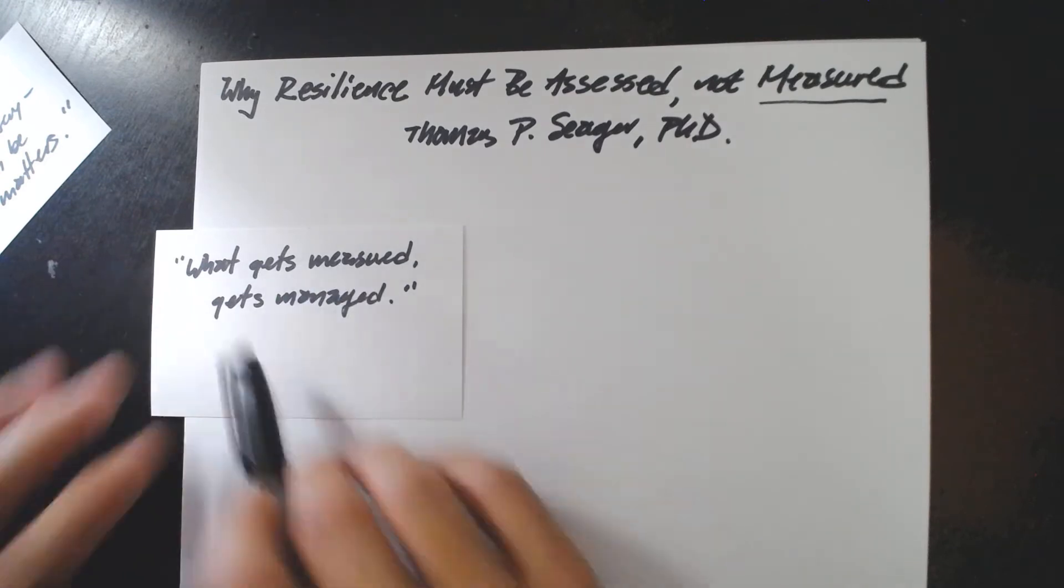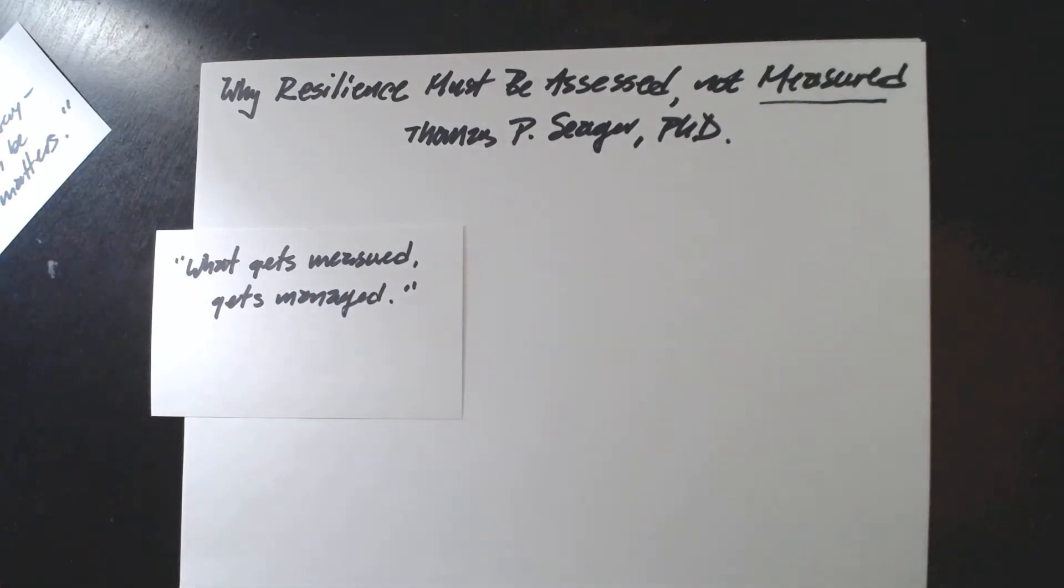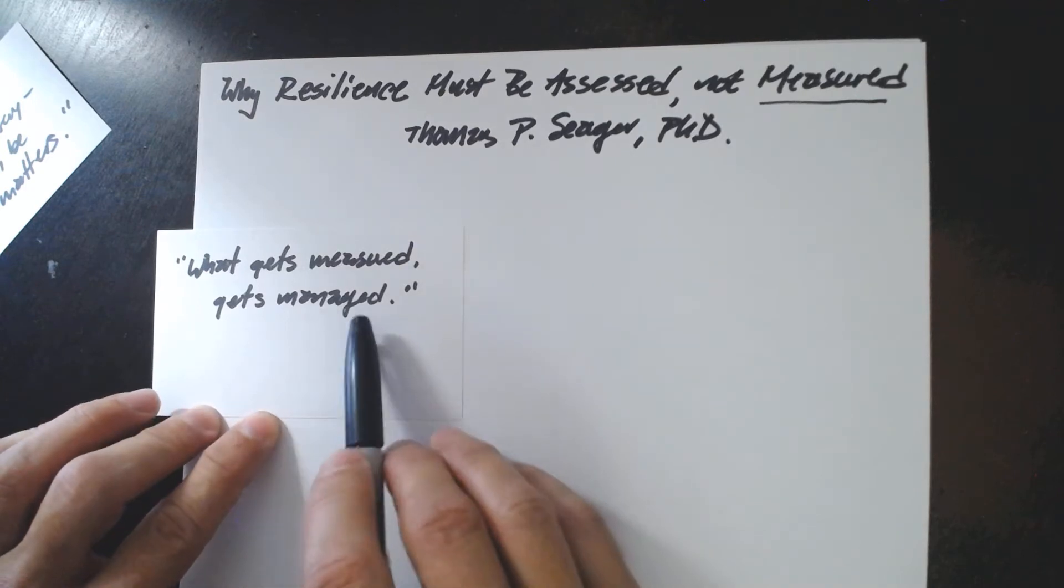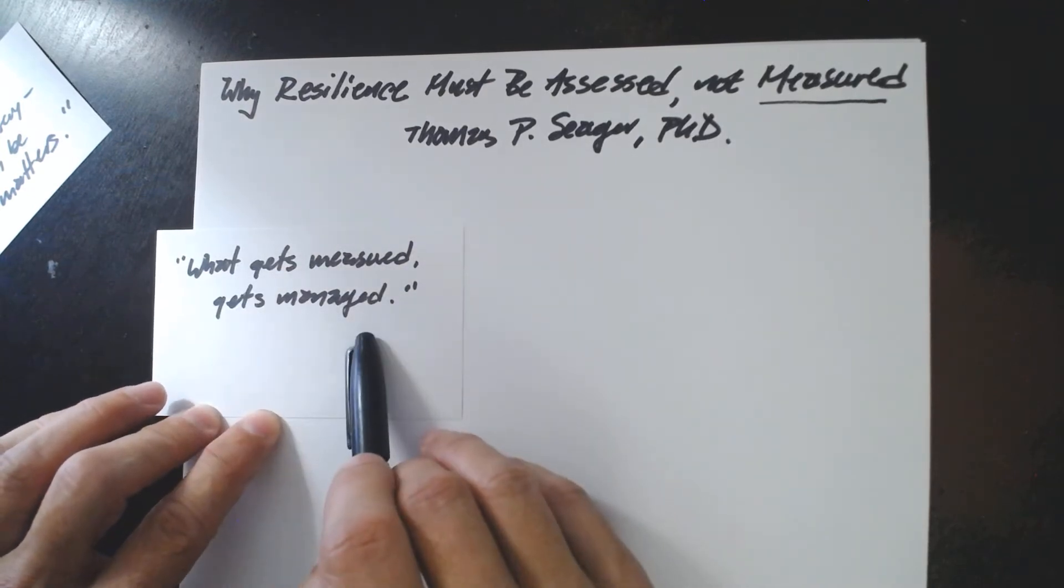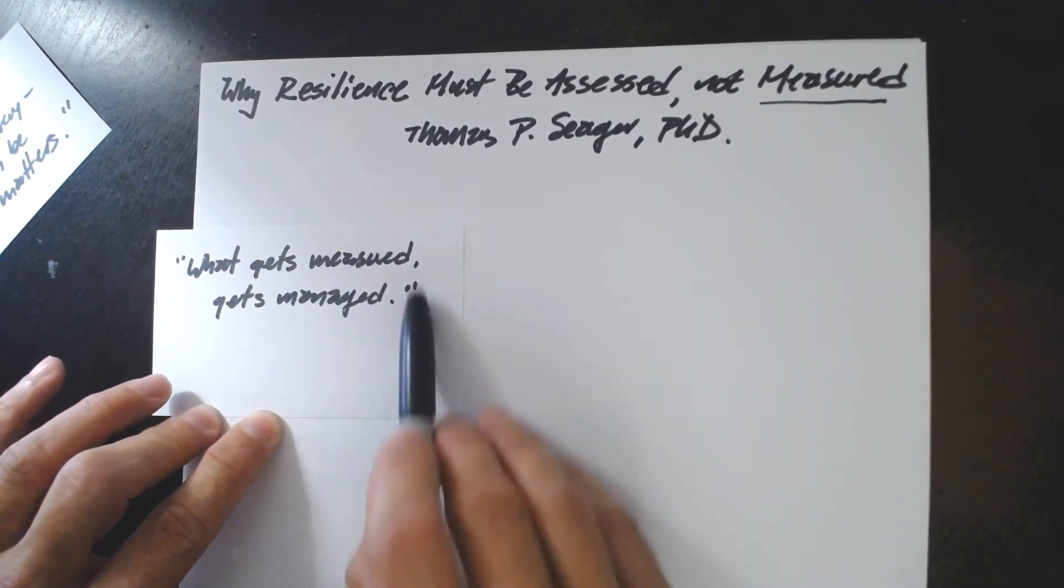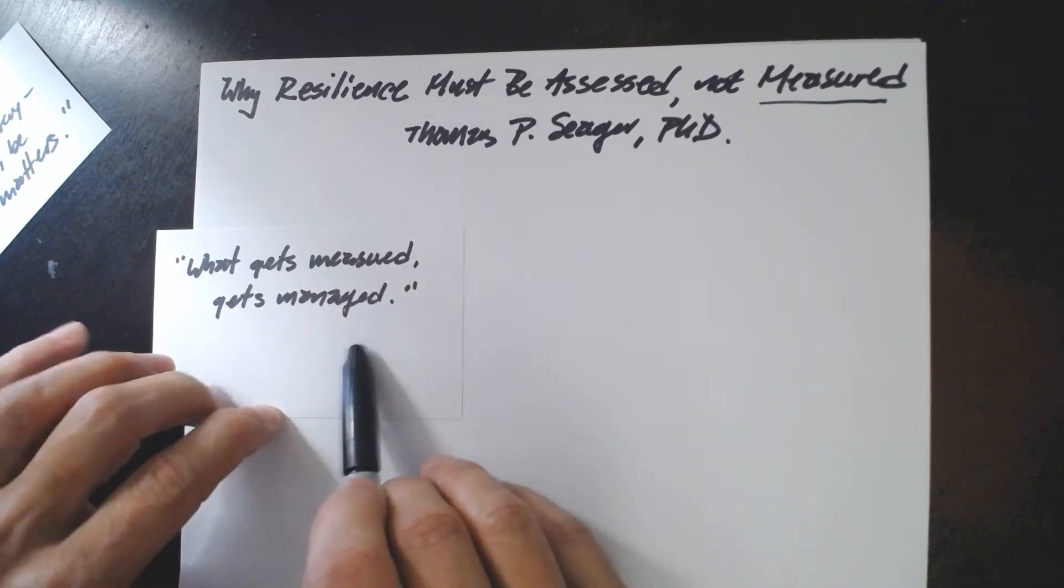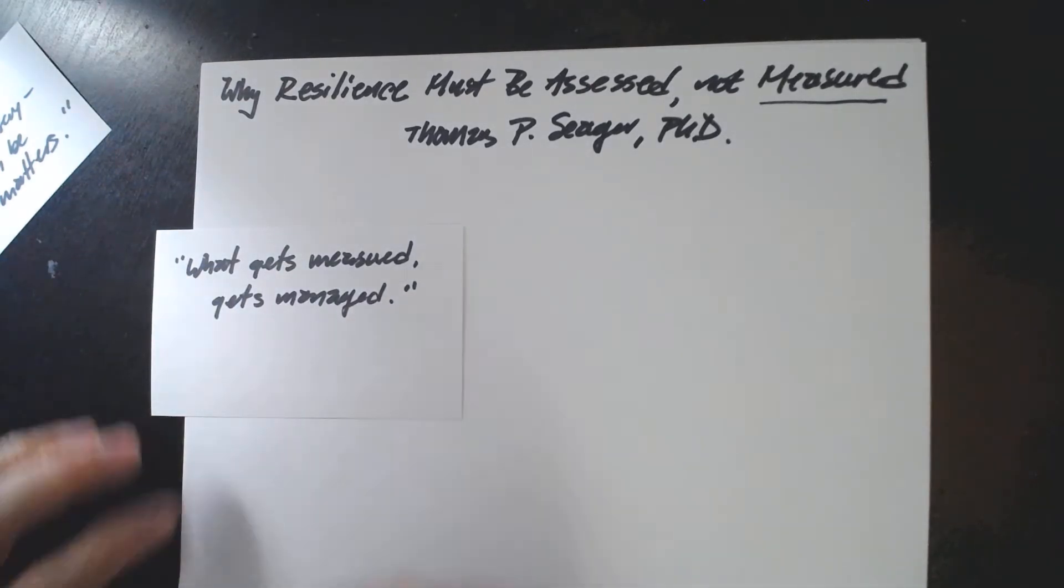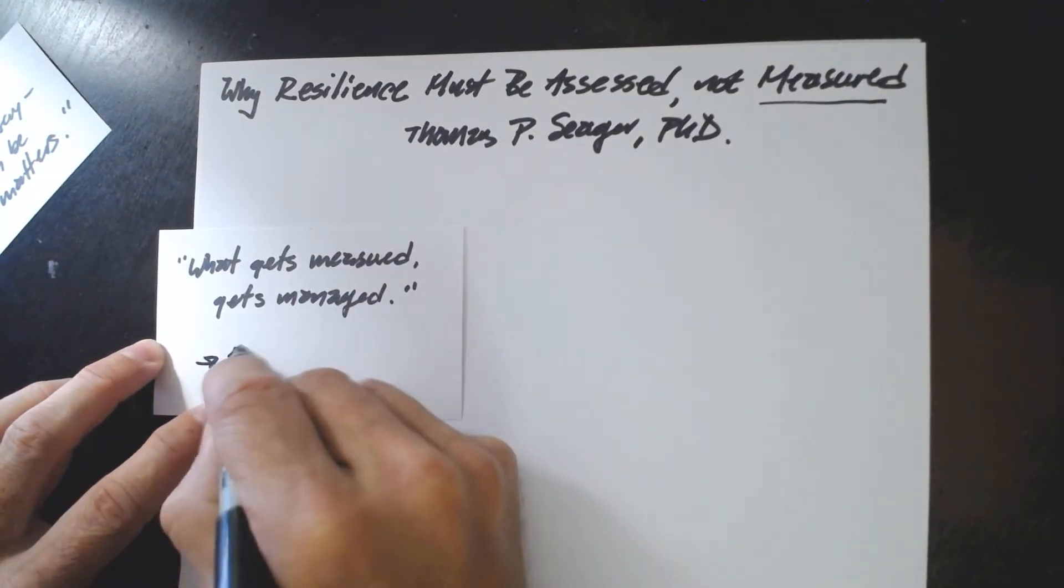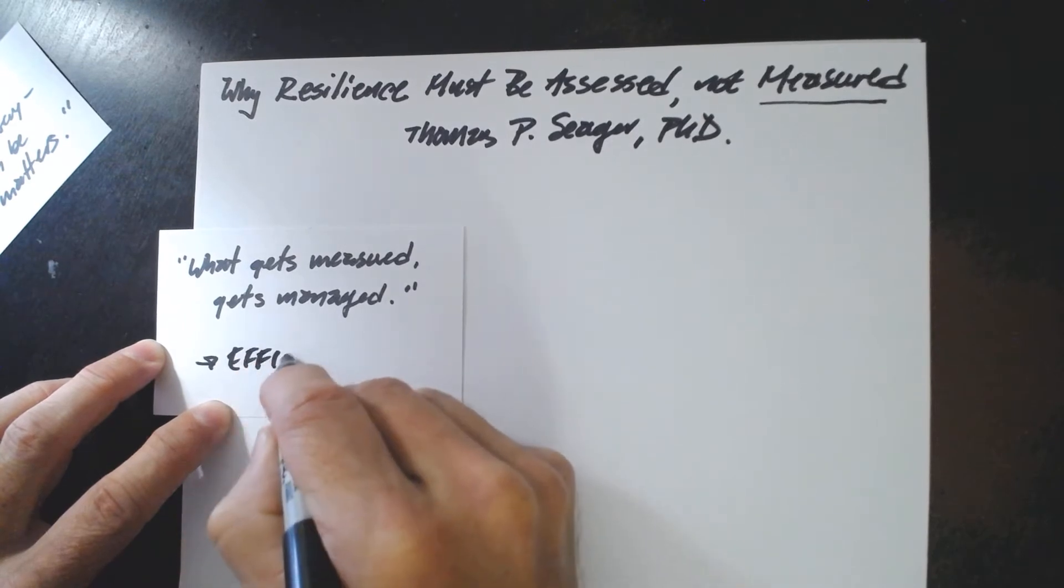It is the bureaucracies of the industrial revolution, the organizations in which we're embedded, whether it's our university or our corporation, that insists upon measurement and management. Certainly the Six Sigma approach to quality emphasizes measurement. Certainly the forms that we fill out and the spreadsheets that we trade. They're all about measuring and managing. And there's a good reason for it.